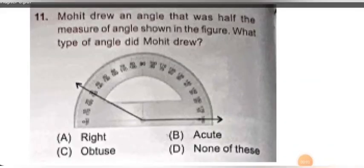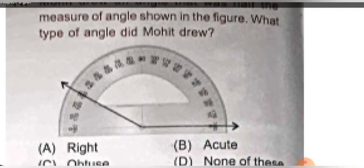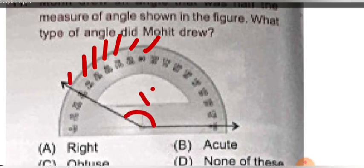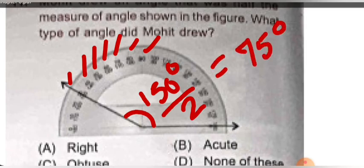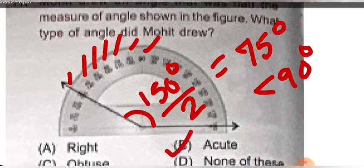Next question: Mohit drew an angle that was half the measure of angle shown in the figure. What type of angle did Mohit draw? We first need to find the given angle. Zooming in a bit: this is 90 degree, 100, 110, 120, 130, 140, 150 — so the given angle is 150 degree. Mohit drew half of that, so 150 divided by 2 equals 75 degree. Since 75 is less than 90 degree, that is an acute angle. Option B is correct for this question.